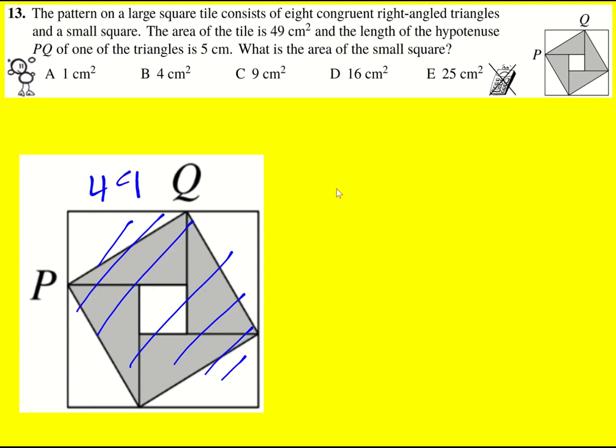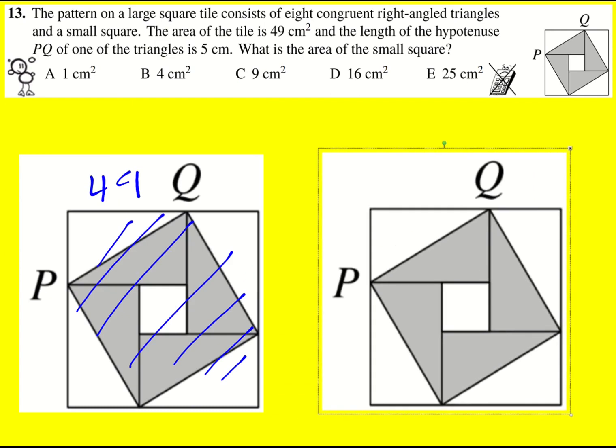Then we're also told that the length of the hypotenuse is equal to 5. So that would be this here, but it would also be this here and this here.